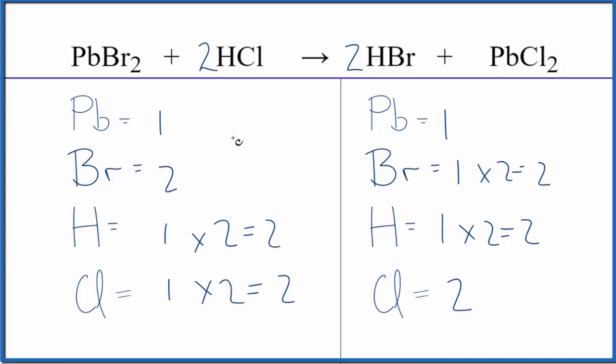If you wanted to write the states, lead bromide, if you look that up on a solubility table, it's only slightly soluble. So just a little bit of it dissolves. We're going to call this a solid. Hydrochloric acid is a strong acid, so that's aqueous.